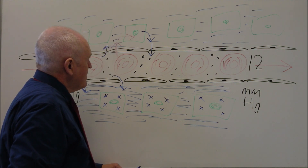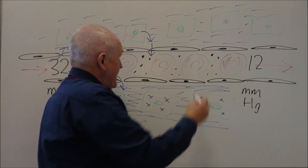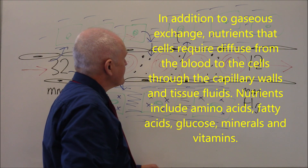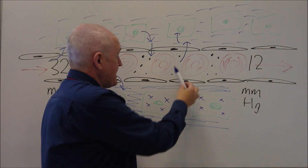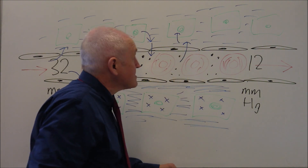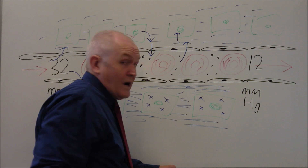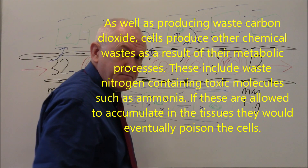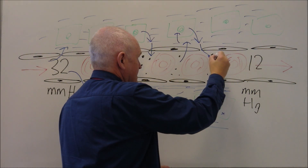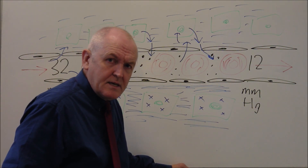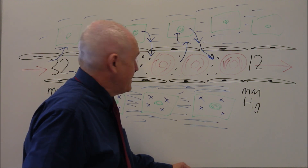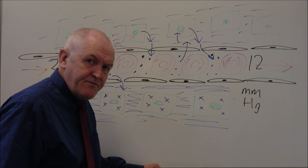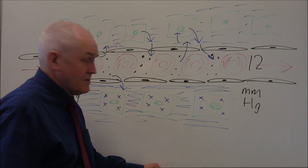Cells need other things as well — glucose has to diffuse from the blood into the tissue fluid before it gets into the cells. Vitamin C also has to go from the blood to the tissue fluid into the cells. Waste products of metabolism, such as nitrogen-containing waste from protein metabolism, need to get back into the blood so they can go to the liver, be converted into urea, and be excreted via the renal system. So tissue fluid is the essential medium of diffusional exchange between the blood and the cells.